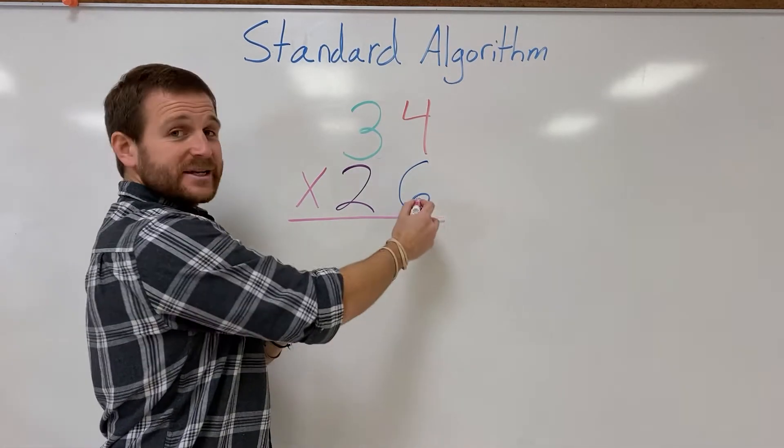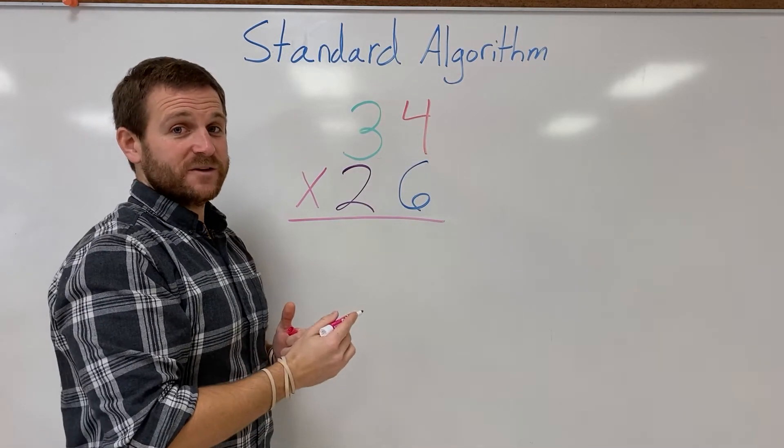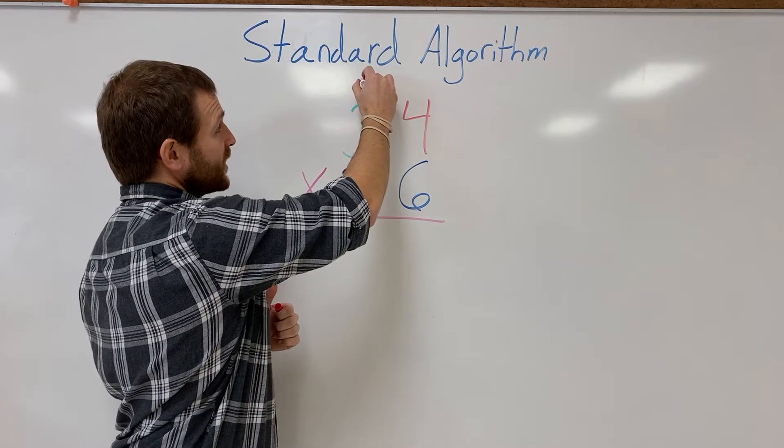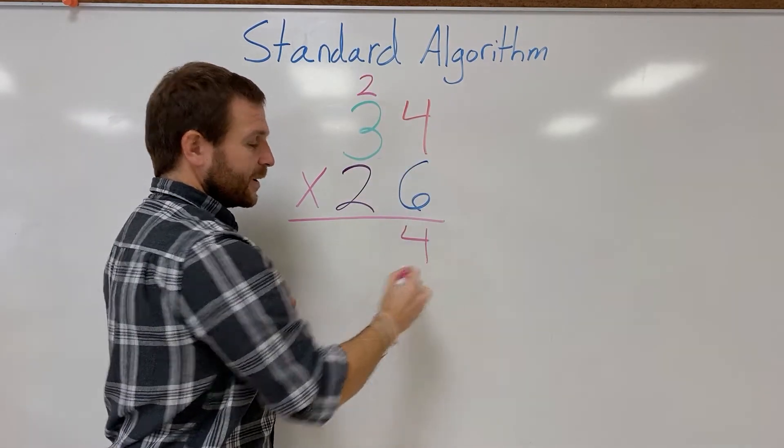Again, like I said, I'm gonna start with my 6 times 4. 6 times 4 is gonna give me 24. So I'm gonna write my 20 up here, carry my 2, and then my 4 comes down here.